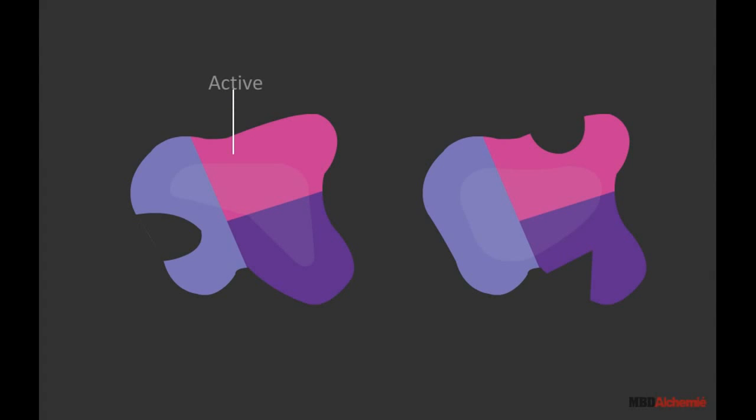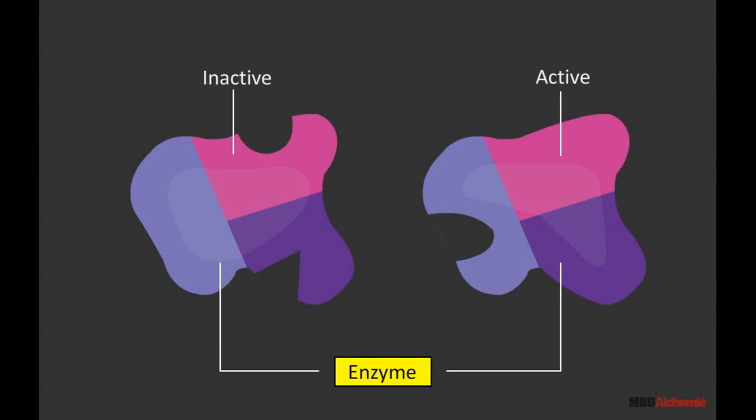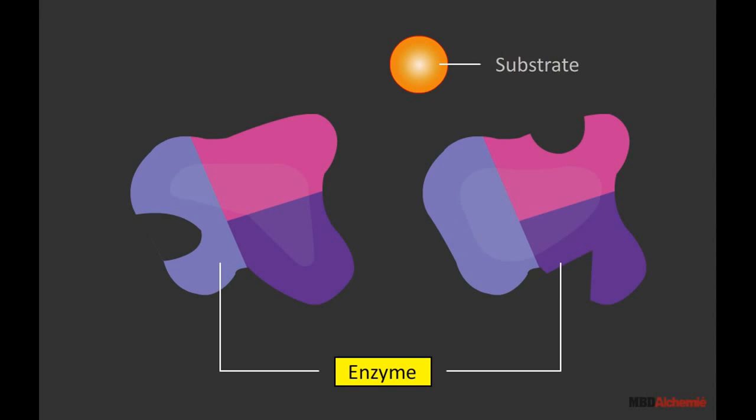Enzymes could be inactive or active state. Substrate molecules can only be converted to products when they bind with active site of enzymes.